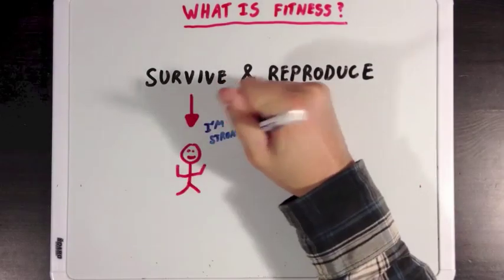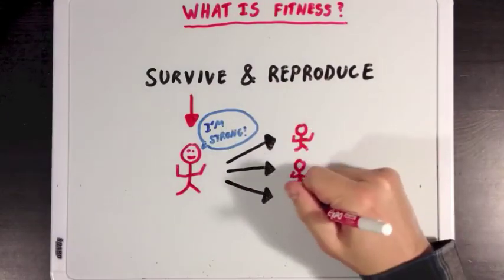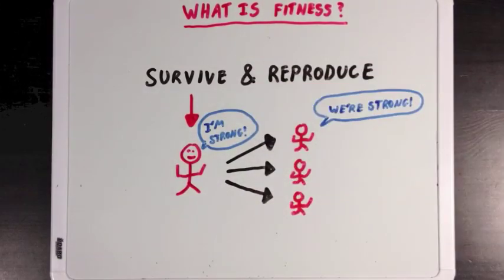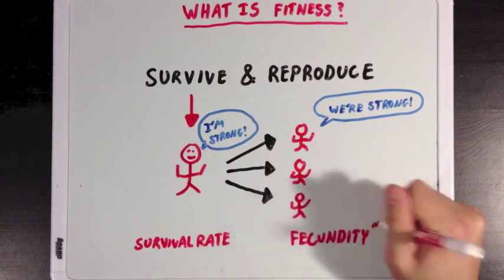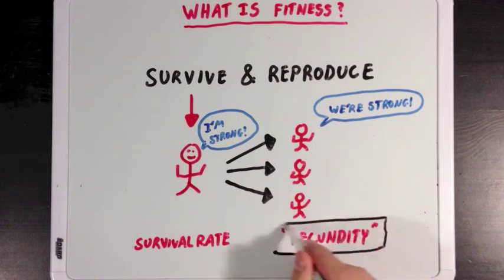Our strong guy probably has a higher survival rate than the average person, but actually reproduces the same as everyone else. And how well someone can reproduce is determined by that person's fecundity, which is what we're going to talk about today.